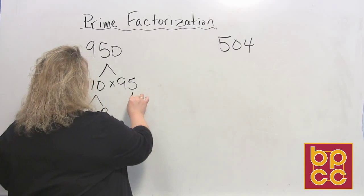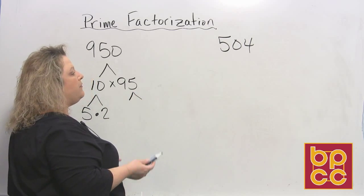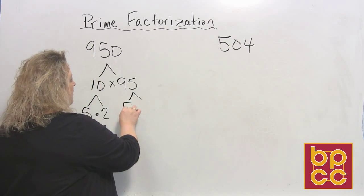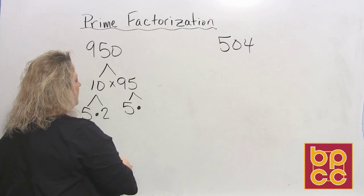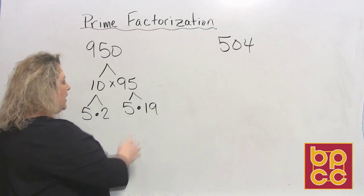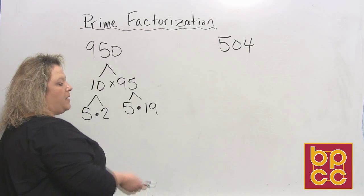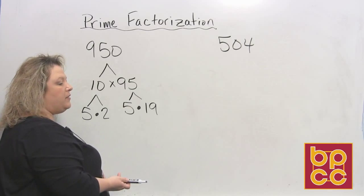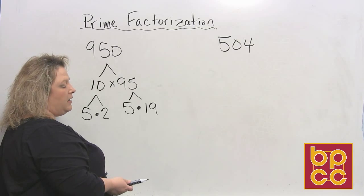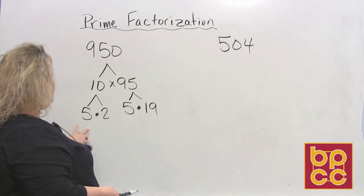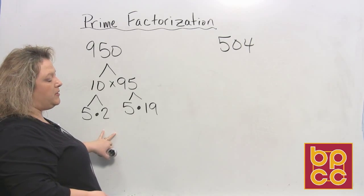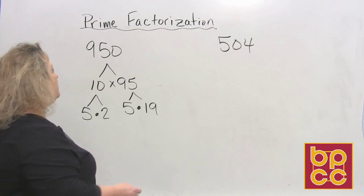Then I go over here to 95. Again the rule says if it ends in five or zero then five will divide into the number. So five divides into 95 nineteen times. Now we already know that five is a prime number, but you have to look at 19 and say, does anything multiply together to give me 19? And the answer is no. So I am done. I have divided as low as I can go.